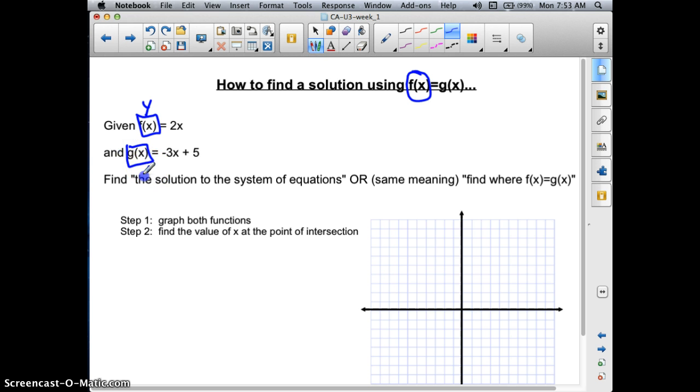But now we can use f or g so that we know that one function is different from another function. So don't let the f of x and g of x throw you. It's there in place of the y. This is like y equals 2x, and this one is like y equals negative 3x plus 5.